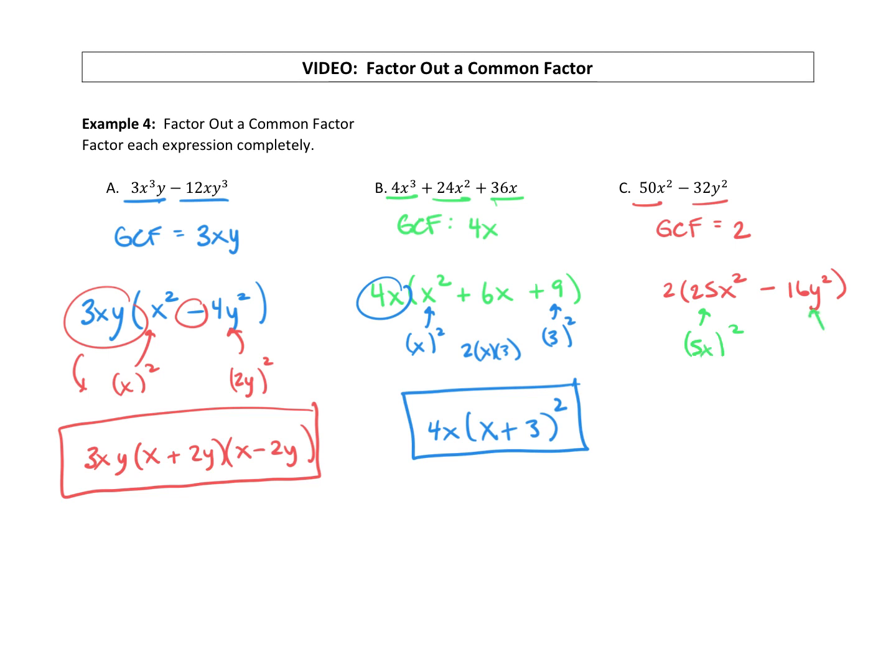Do we square anything to get a 16y squared? Yep, 4y times 4y. And are we finding the difference? And we are. So we can factor this into our pattern. 5x plus 4y times 5x minus 4y.